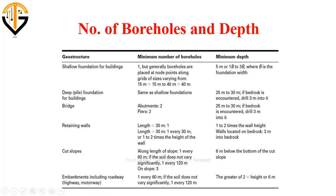For a shallow foundation, the minimum number of boreholes should be one, placed at node points along a grid with sizes varying from 15×15 to 40×40. The minimum depth should be 1B to 3B, where B is the assumed width of the foundation, and the exact value depends upon experience.